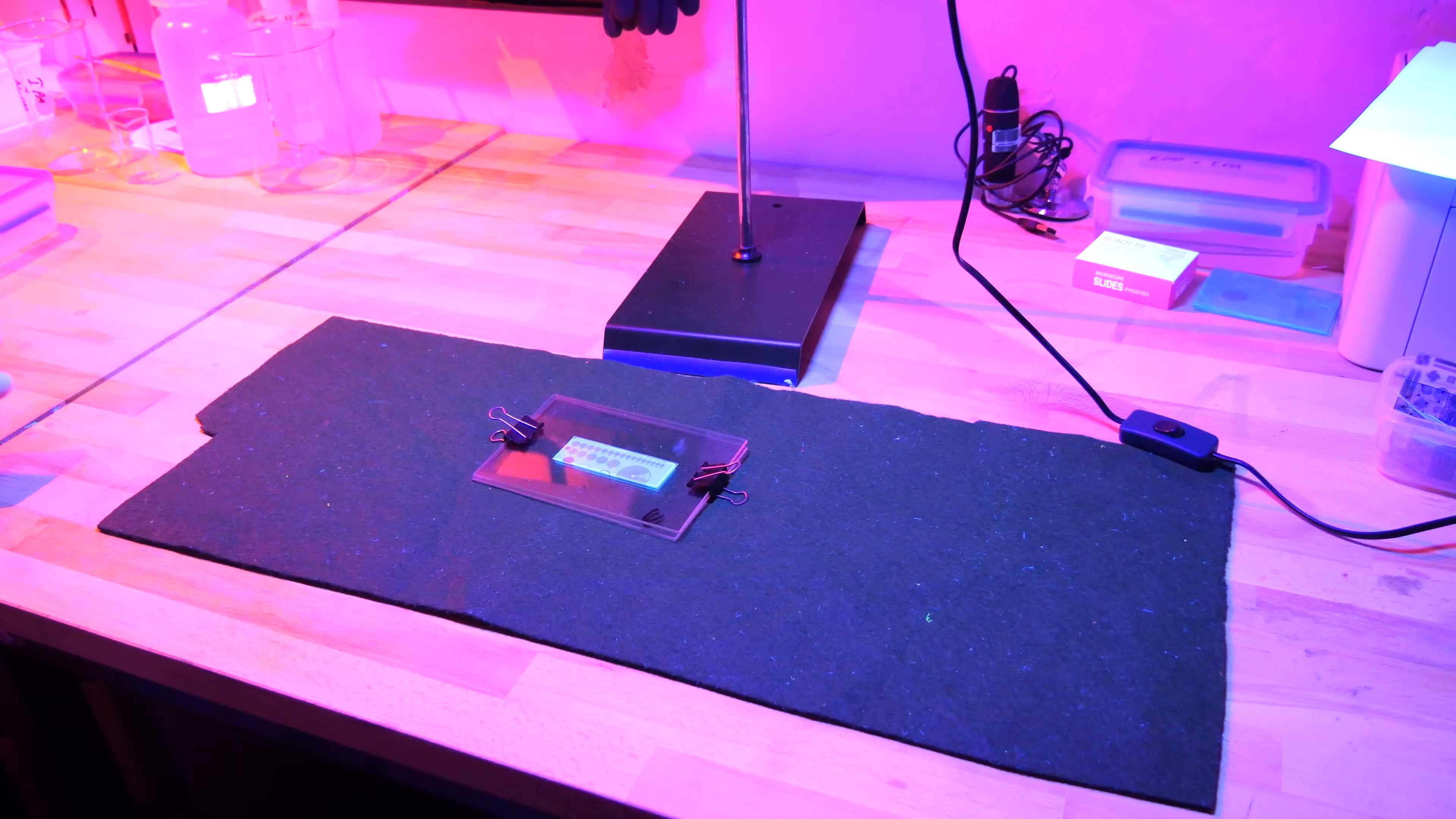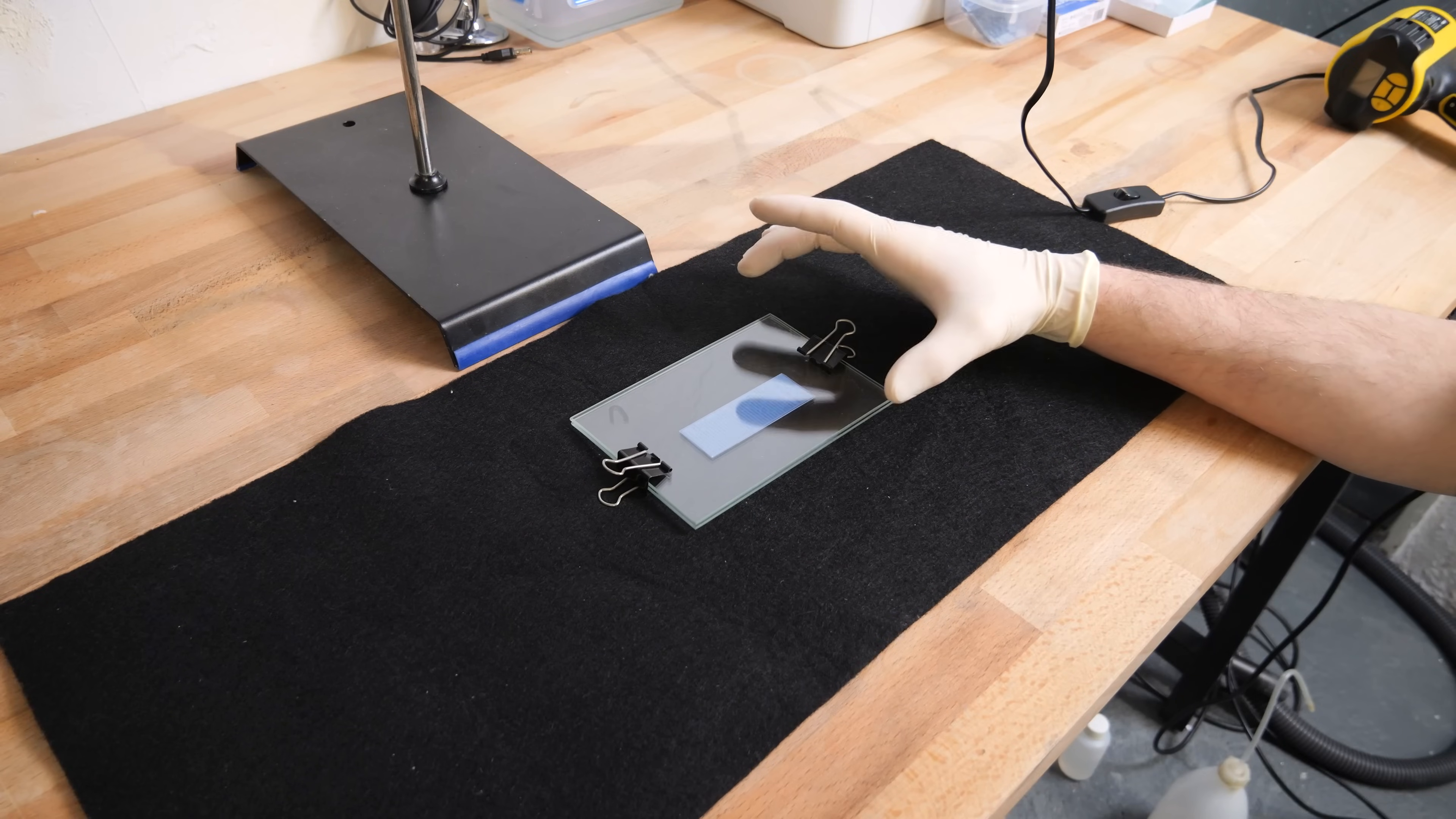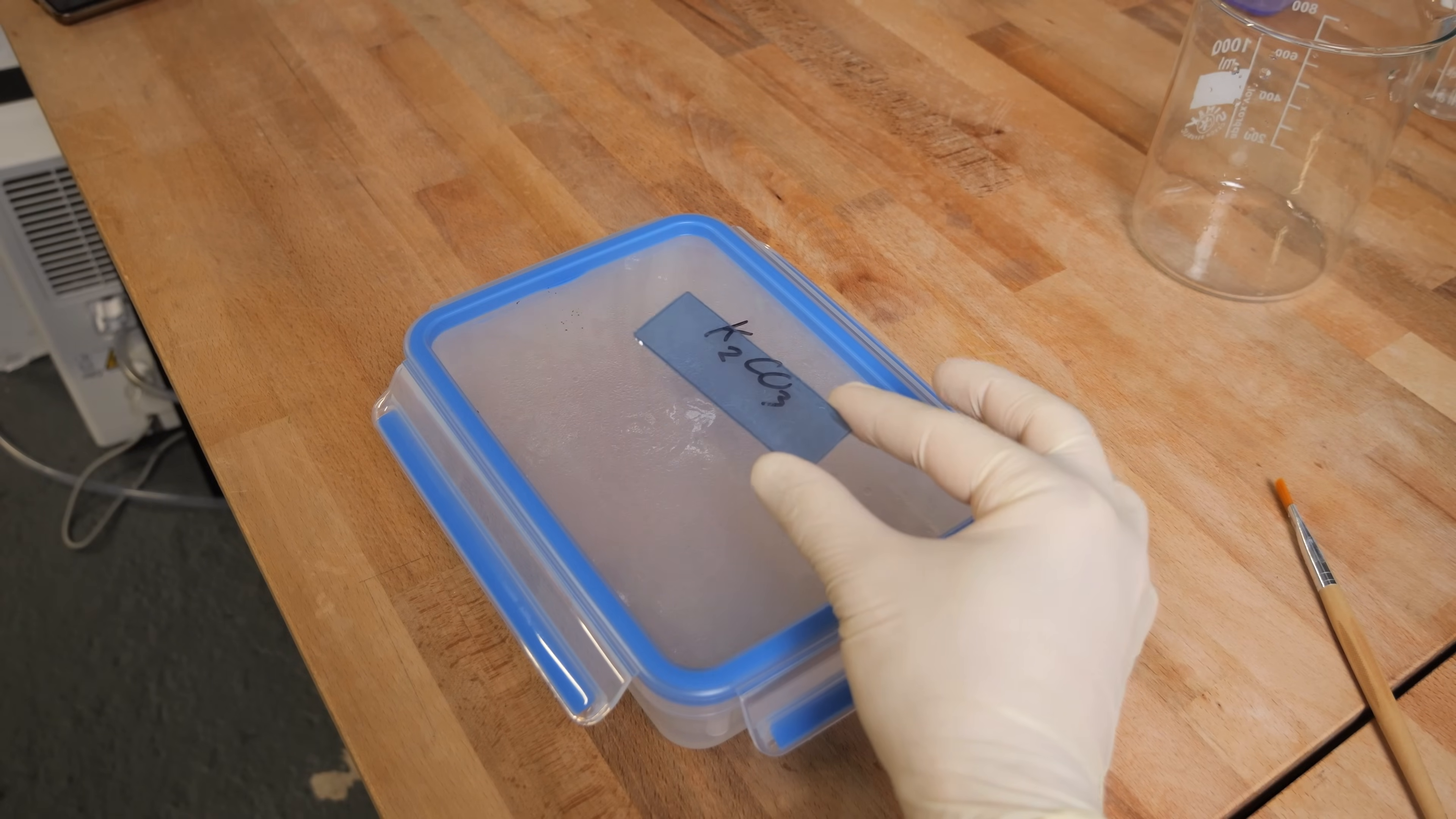I then expose the photoresist for 35 seconds. How long the photoresist needs to be exposed depends on a lot of different factors: your light source, the distance from the light source to the photoresist, the mask you're using, the photoresist you're using. So you basically have to find the perfect exposure time for your setup. After exposing the photoresist you can already faintly see the text, which means now it is time to develop the photoresist.